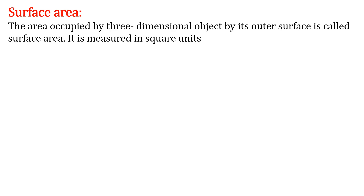Before starting, let's learn what is surface area. You have learned in your previous lesson that area means the space occupied by an object. In area we studied two-dimensional objects like rectangle, square, and circle. For surface area, we need three-dimensional objects. The area occupied by a three-dimensional object by its outer surface is called surface area. It is measured in square units.